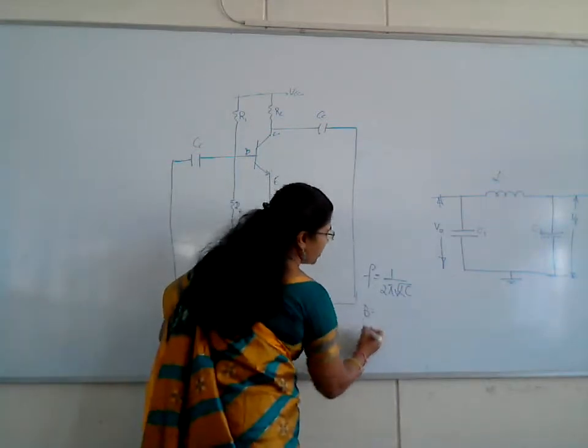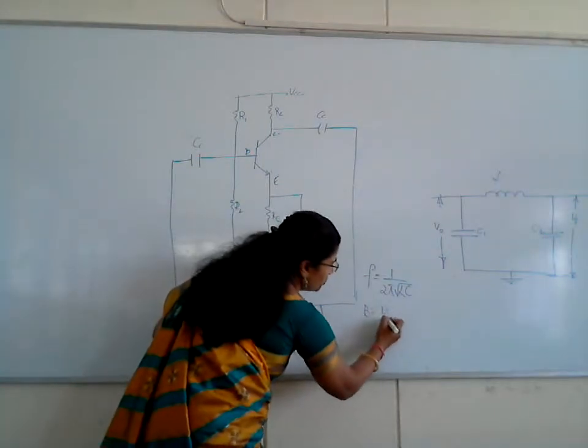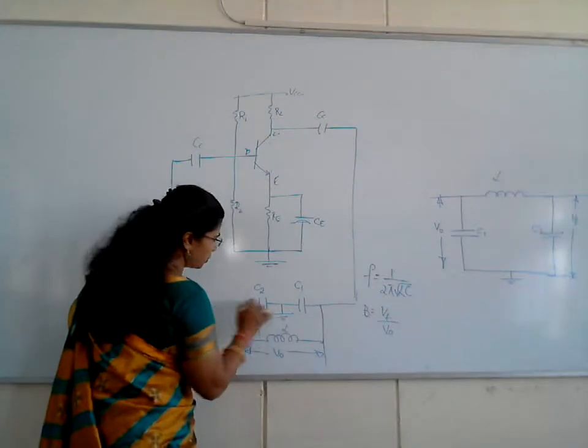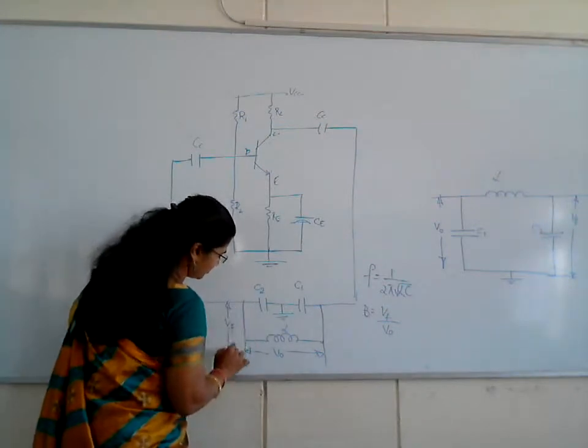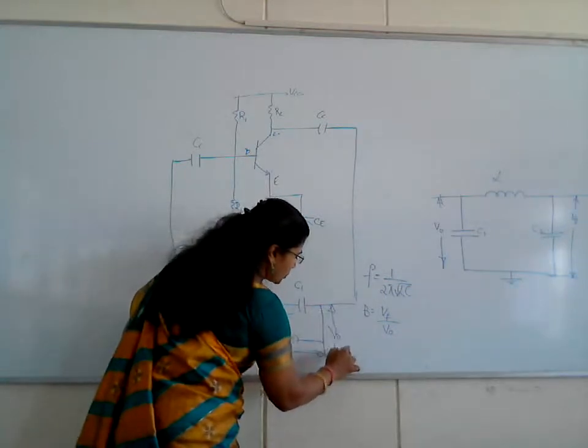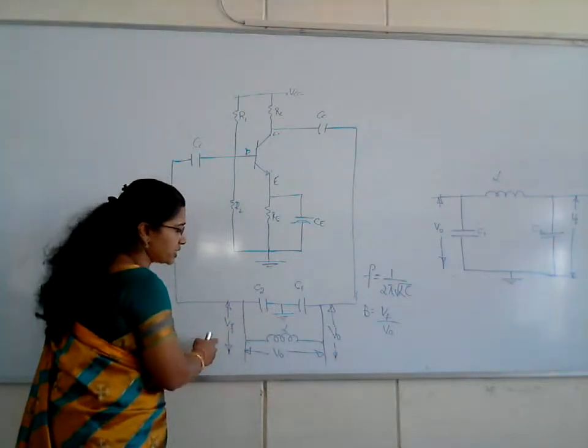Let us calculate the feedback gain. The feedback gain is equal to output voltage divided by input voltage, because the output voltage is Vf0 and input voltage is V0. V0 is applied as the input to the feedback, and Vf is measured as the output.